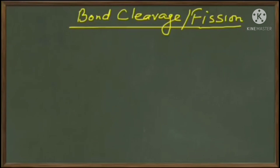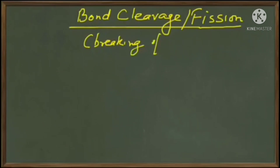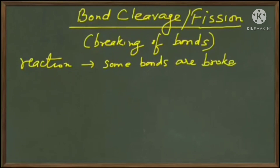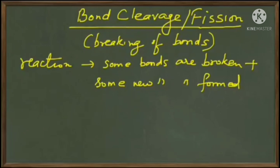Today we are going to look at bond cleavage or fission. Bond cleavage simply means the breaking of bonds. This is important in organic chemistry because any reaction means that some bonds will be broken and some new bonds will be formed. So it is important for us to understand how bonds are broken. There are two kinds of bond fissions or cleavage that occur in organic chemistry.